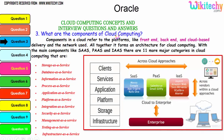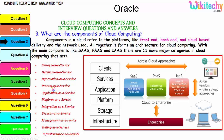The components of cloud computing refer to platforms like front-end, backend, cloud-based delivery, and the network used. Together they form the cloud computing architecture. The main components are software as a service, platform as a service, and infrastructure as a service. There are 11 major categories in cloud: storage as a service, database as a service, information as a service, process as a service, application, application platform, integration, security, management, testing, and infrastructure. These are all additional services associated with the three major ones.